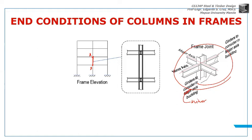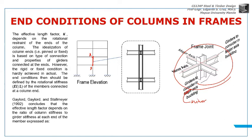So now, how do you solve the effective length factor when your column is like this - part of a frame? As what I've said, this is dependent on the stiffnesses. When we say stiffness, that's EI over L.